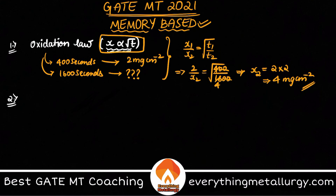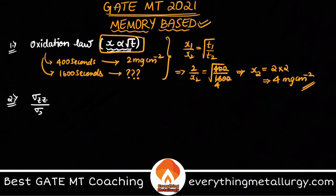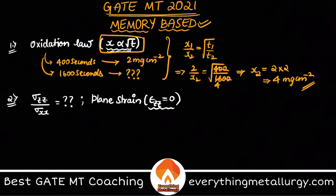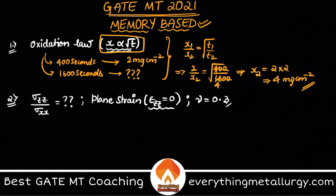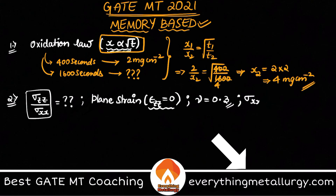The second question is an interesting and easy tricky question. They asked for the ratio σ_zz / σ_xx. The given conditions are: plane strain condition, ε_zz = 0, Poisson's ratio ν = 0.3, and the normal stresses in x and y directions are equal: σ_xx = σ_yy. People might be confused about how to find this ratio.